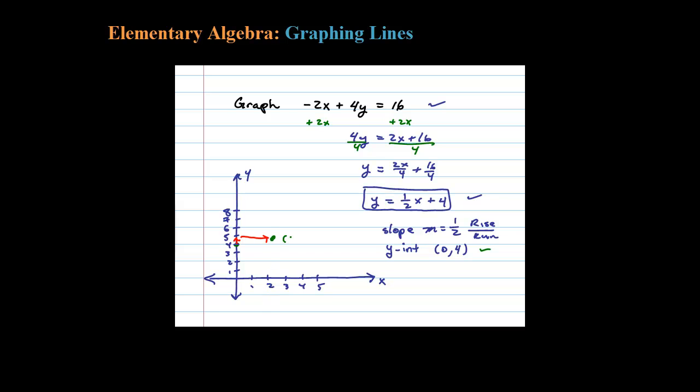Two points determine a line. Connect the dots and there's the rough sketch of the line -2x + 4y = 16.